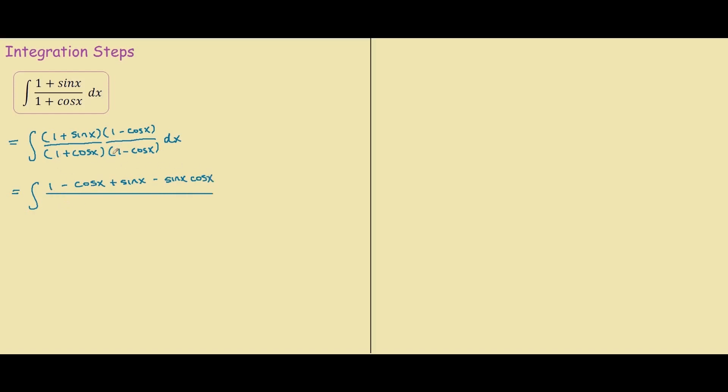And on the bottom we have 1 times 1 is 1 minus cosine x plus cosine x, so they cancel out. And we have minus cosine squared x.